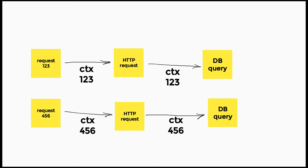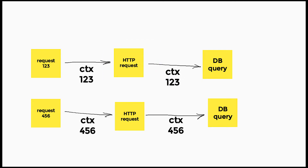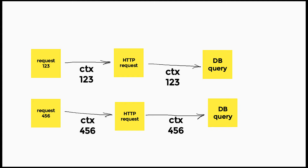You can store values inside a context, but more importantly the context package exposes tools for you to control the flow. For instance, if there's a timeout at the DB layer, the context for that request can relay that information to the HTTP layer and cancel it. Another example: if a user cancels the request, that cancellation can be propagated via the context to stop a long, expensive DB query. You'll often see libraries and SDKs exposing methods that ask for a context.